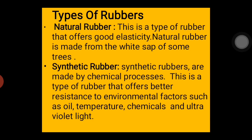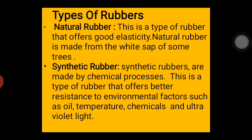This is a picture of a rubber tree. Some of these trees are found in forests and bushy areas. This is an example of a rubber tree — when you cut the bark, you get latex from it, and from that latex you produce rubber.